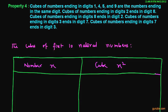Cube of numbers ending in digit 2 ends in digit 8. This means if the unit digit of a number is 2, then the unit digit of the cube of that number will be 8. Similarly, if the unit digit of a number is 8, then the unit digit in the cube of that number will be 2. And if the unit digit of a number is 3, then the unit digit of the cube of that number will be 7.